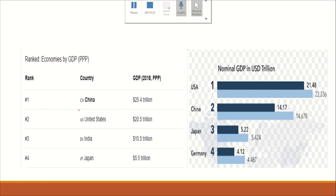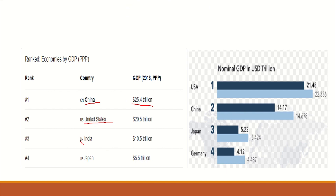In terms of PPP, China is the largest economy, the US is second, and India is third. In terms of nominal GDP, the US is the largest, China is second, Japan is third, Germany is fourth, and India has now become the fifth largest economy, having surpassed the UK recently.